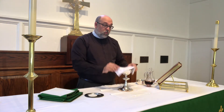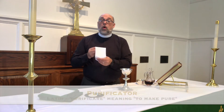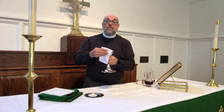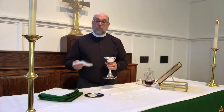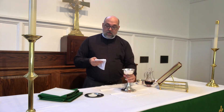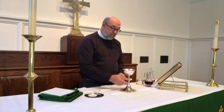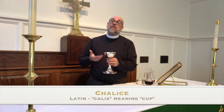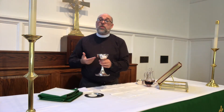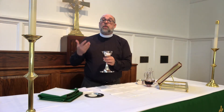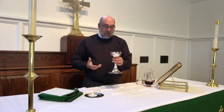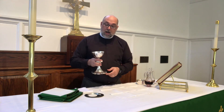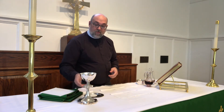Then we have what I mentioned a minute ago — the purificator. The purificator is a linen that is used to wipe the edge of the chalice. It has a very practical purpose. And why have a cup when you can have a chalice? The chalice is what contains the wine which we consecrate to be the blood of Christ, and we take this and distribute it out to the congregation via the chalice.